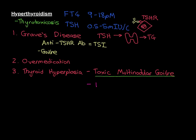Another major example of thyroid hyperplasia is what we call a toxic adenoma. Whilst toxic multinodular goitre is a thyroid gland that has overgrown all over to end up massively enlarged and multinodular, in a toxic adenoma a tumour has formed. This tumour is not cancerous — it's an adenoma, meaning a benign tumour of glandular tissue. However, it is productive, hence the word 'toxic' in front, because it's capable of producing thyrotoxicosis and causing hyperthyroidism.